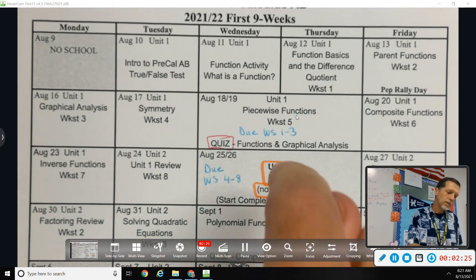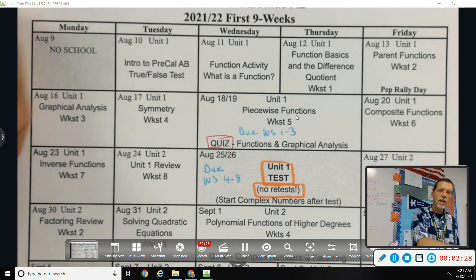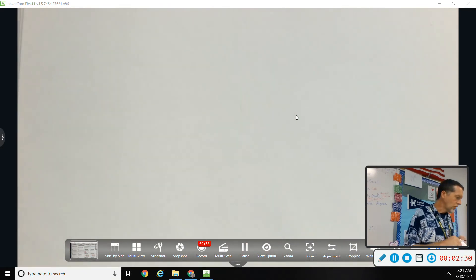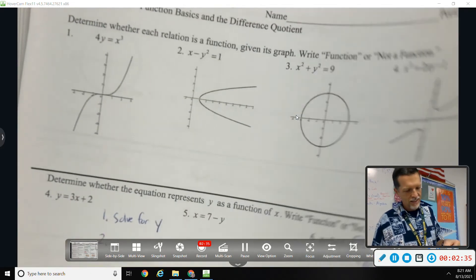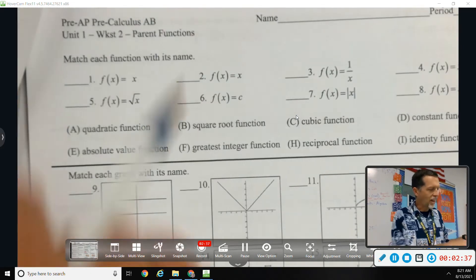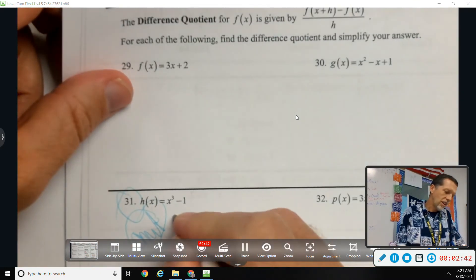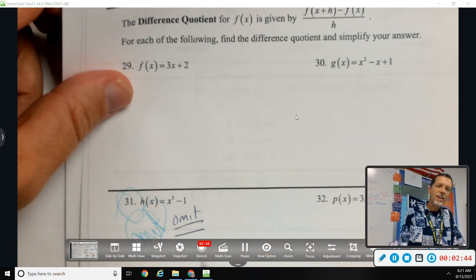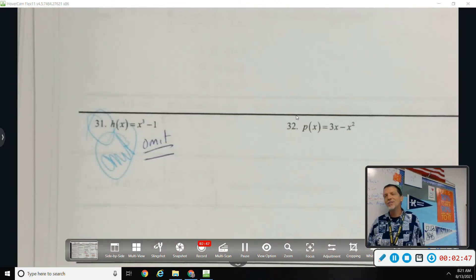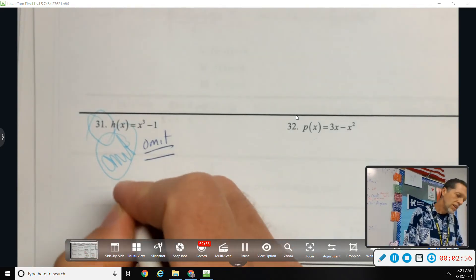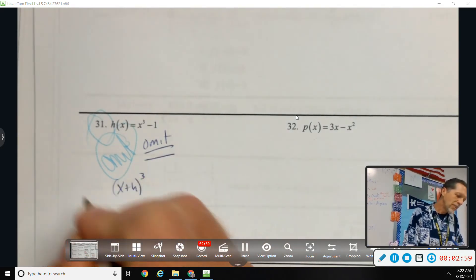Let's answer some questions. I first have to apologize because I should have told you to omit number 31. It was the worst one on there, so I apologize if you tried it. You got it great, but you had to foil out, and not just foil but multiply out x plus h cubed, which is not impossible, it's just ugly.